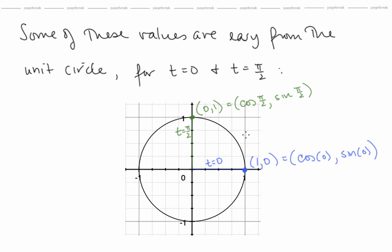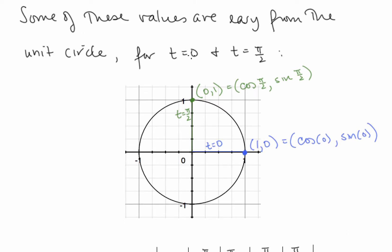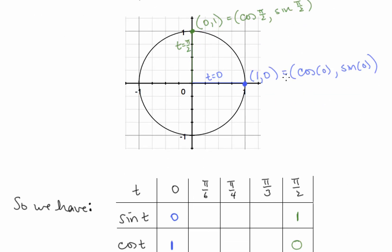Some of these values are easy from the unit circle. For t equals 0, we're not traveling anywhere from the point (1, 0). The angle is 0, so we know this is the point (1, 0). The x coordinate is cosine of 0, and the y coordinate is sine of 0, so cosine of 0 is 1 and sine of 0 is 0. Similarly, for t equals π/2, a 90 degree angle, we're at the point (0, 1). So cosine of π/2 is 0 and sine of π/2 is 1.